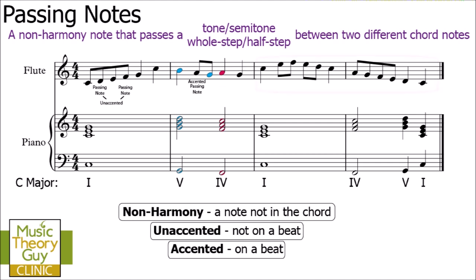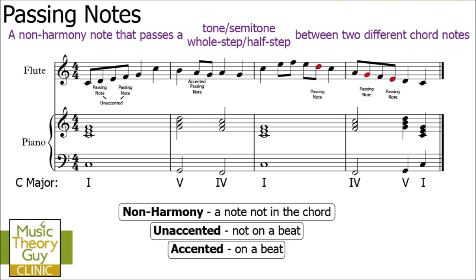Here's a challenge — pause the video and see if you can work out where the remaining passing notes are in bars three and four. Hopefully you went through each note one by one, worked out which notes are chord notes, then focused on the non-harmony notes. Those notes are the passing notes, and if you wanted extra marks you could have even said they were unaccented passing notes.